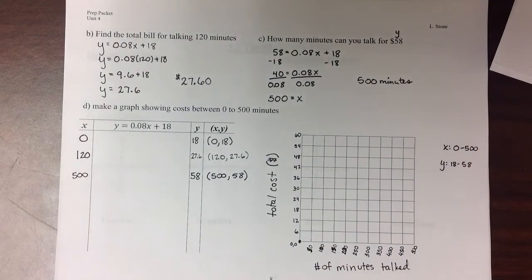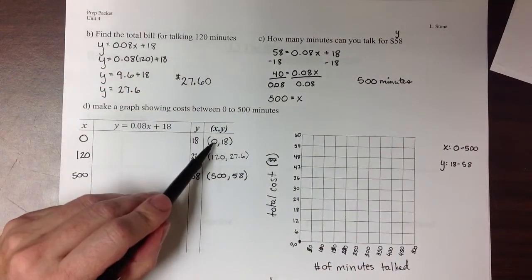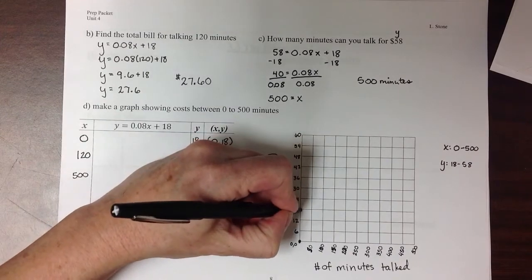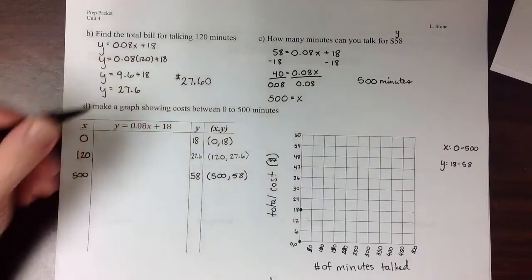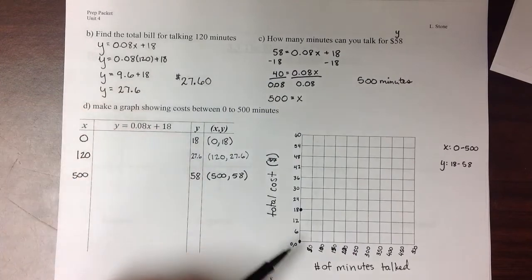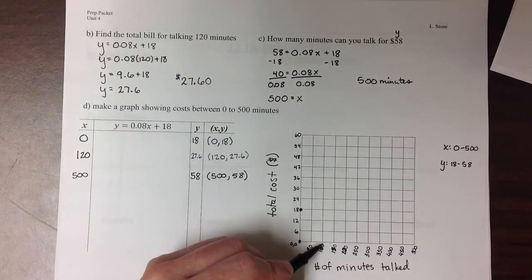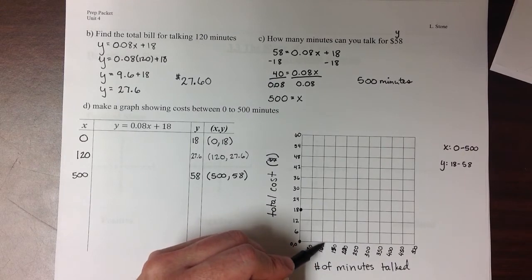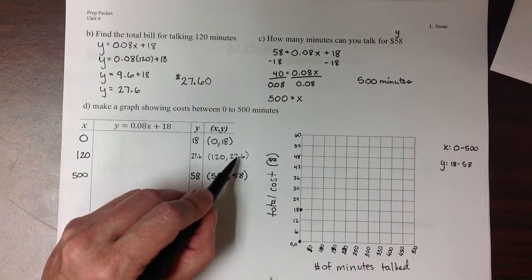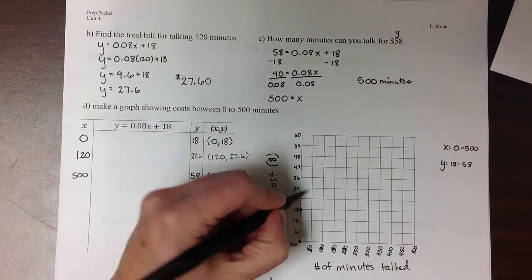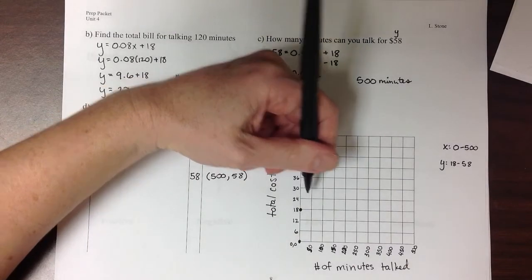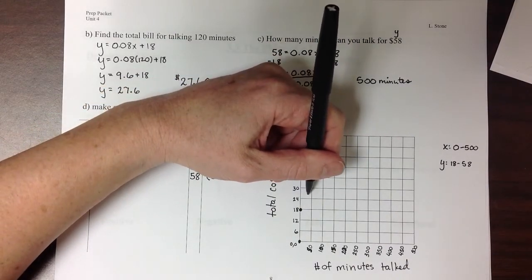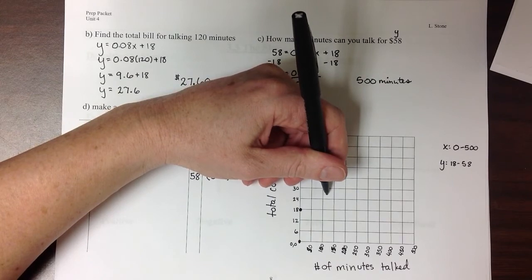Then to graph it, I need to start my graph at the point (0, 18), which would be this point right here. Then my next point is where x is equal to 120. So that's going to be between my 100 and 150, just slightly closer to the 100, since 125 would be the middle. And I'm at 27.6, which is just a little more than halfway between 24 and 30. So coming out here, it looks like somewhere about right there is a good point to put that dot.